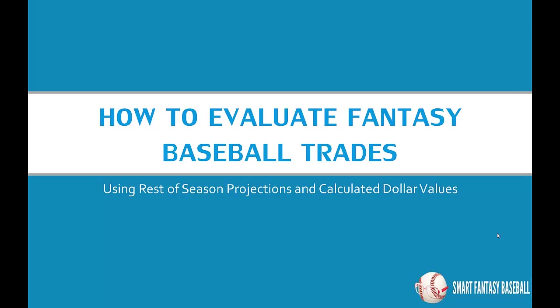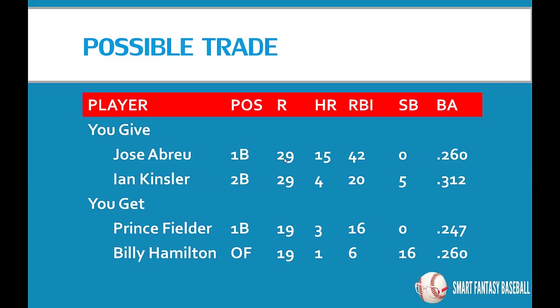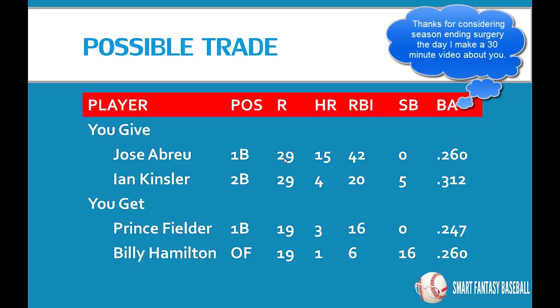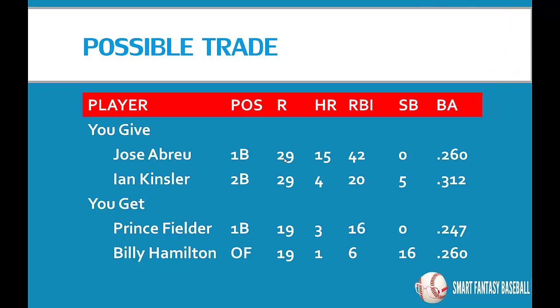We're going to evaluate a hypothetical trade offer using the rest-of-season projections I've recently put in my spreadsheet. As I create this video, it's late May 2014, but the nice thing about these spreadsheets is that with a little bit of maintenance, you can keep them up to date — just download new projections, drop them in, and update a couple of things. Our hypothetical trade offer is Jose Abreu and Ian Kinsler for Prince Fielder and Billy Hamilton. Looking at the stats accumulated to date, it does look a little lopsided, but we're going to evaluate it and see how things come out.